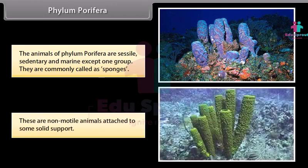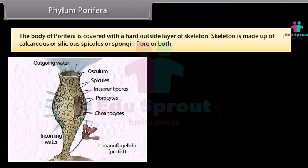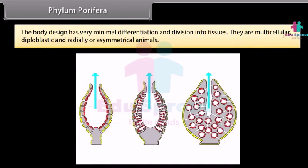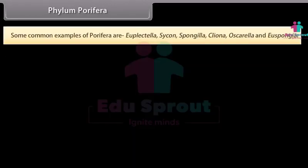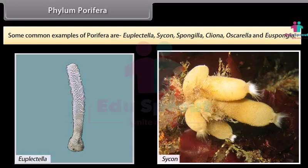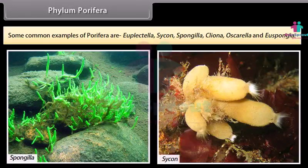Porifera are non-motile animals attached to some solid support. The body is covered with a hard outside layer of skeleton, made up of calcareous or siliceous spicules or spongin fiber or both. The body design has very minimal differentiation and division into tissues. They are multicellular, diploblastic, and radially or asymmetrical animals. Some common examples of Porifera are Euplectella, Sycon, Spongilla, Cliona, Oscarella, and Euspongia.